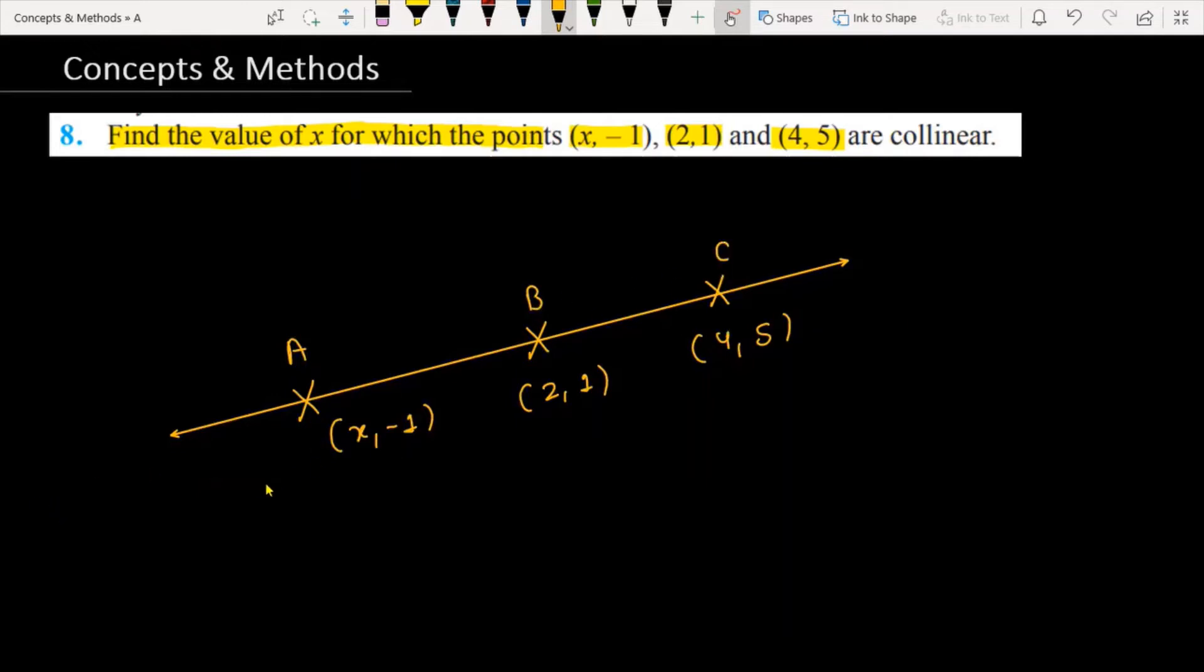The question mentions that they are collinear. If these three points are collinear, then the slope of AB and the slope of BC should be equal. First, let's talk about how to calculate the slope. If you have a line with points (x1, y1) and (x2, y2), then the slope is equal to (y2 - y1) over (x2 - x1).